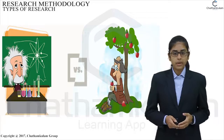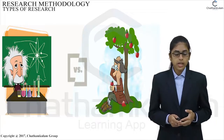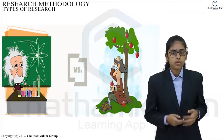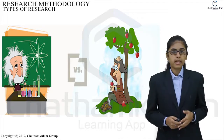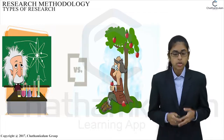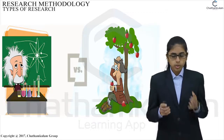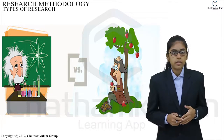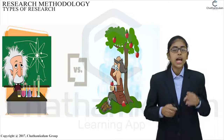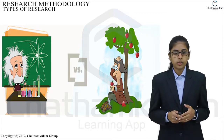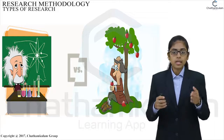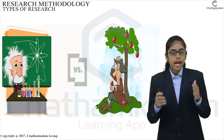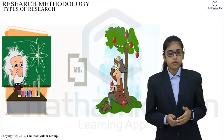Conceptual vs. Empirical. Research related to some abstract idea or theory is known as conceptual research. Generally, philosophers and thinkers use it for developing new concepts or for re-interpreting existing ones. Empirical research, on the other hand, exclusively relies on observation or experience with hardly any regard for theory and system. Such research is data-based, which often comes up with conclusions that can be verified through experiments or observations. Empirical research is also known as experimental type of research, in which it is important to first collect the facts and their sources.